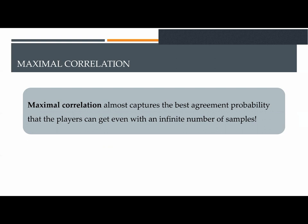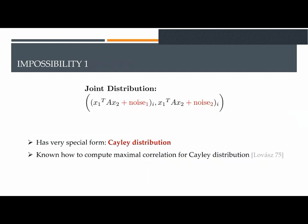In regards to this problem, the notion of maximal correlation has been introduced. It turns out that maximal correlation almost tightly captures the maximum agreement probability that the players can get. In fact, if the maximal correlation is bounded away from 1, then repetition does not help.